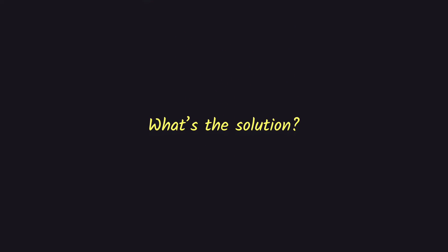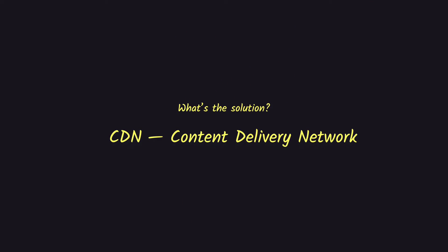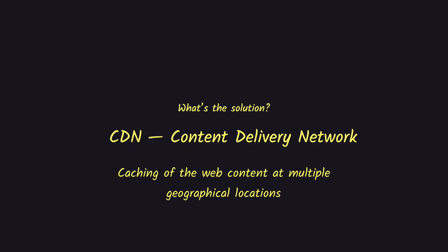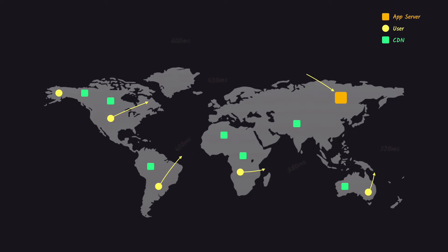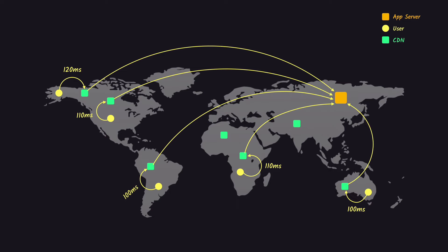So what's the fix? The fix is to use content delivery networks or CDNs, which is simply the caching of web content at multiple geographical locations. Without a CDN we have higher response times. With CDN, we have multiple servers placed in several geographical locations, and requests go to the closest edge server instead of our origin server — so response times are much lower.